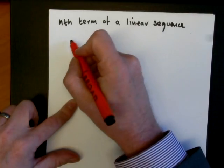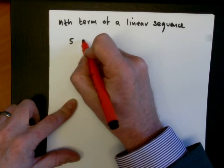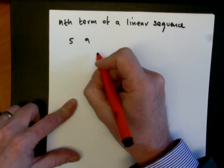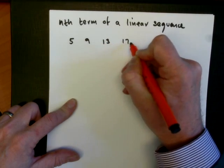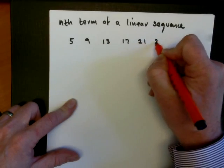So, nth term of a linear sequence. A linear sequence is simply something that goes up in equal steps. So if I add 4 to 5, I get 9. Add 4 to 9, I get 13, 17, 21, and so on.